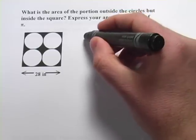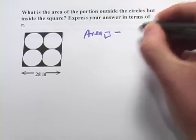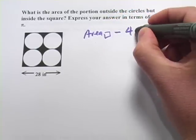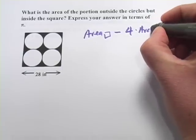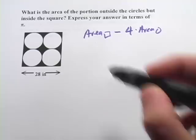So what you want to do here is you want to take the area of the square and subtract 4 times the area of one of the circles. So you're subtracting the four circles from the square.